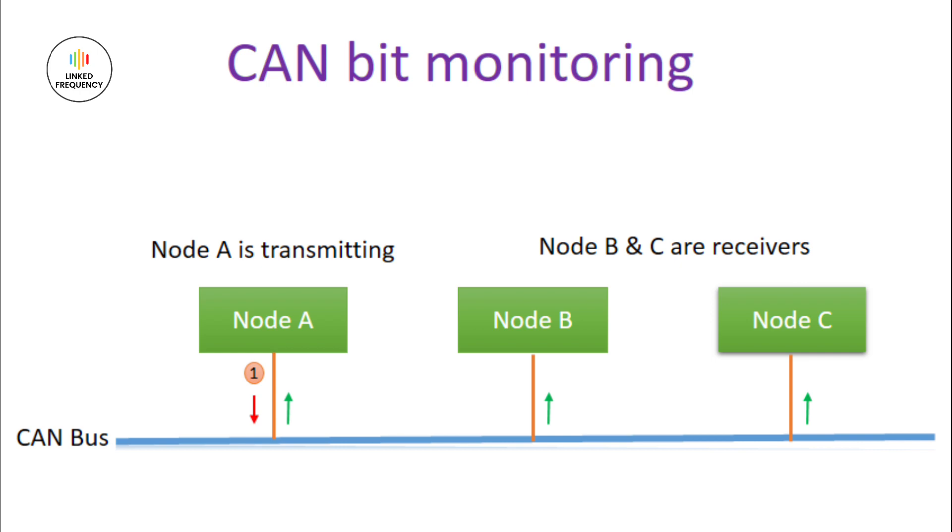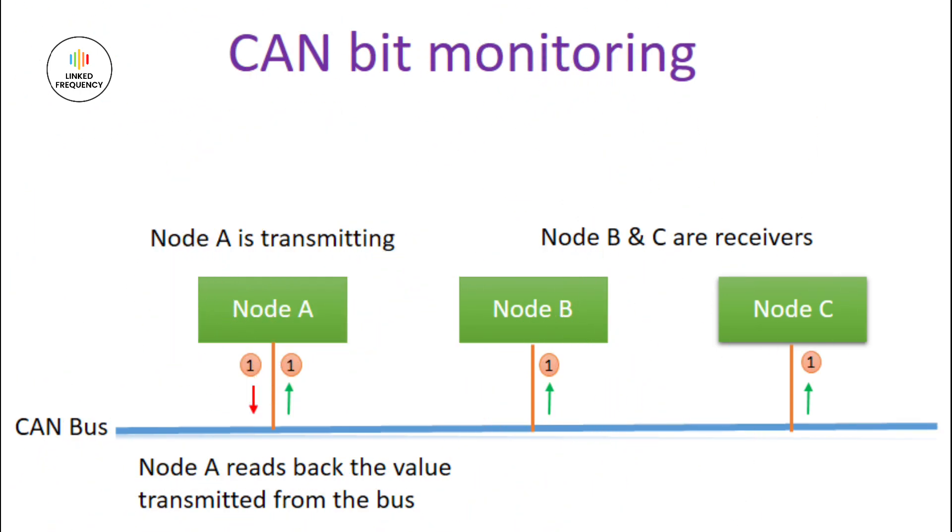the data present on the CAN bus. If the transmitted data and the read data match, then Node A continues to transmit its data.